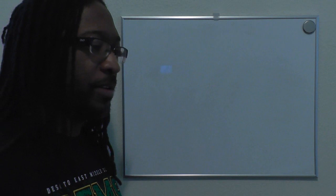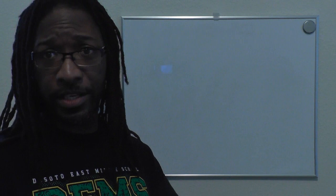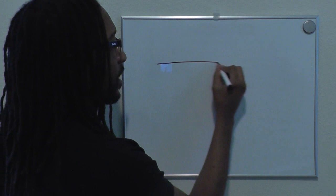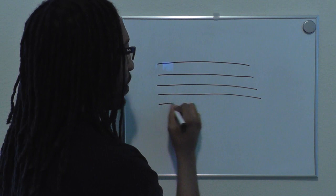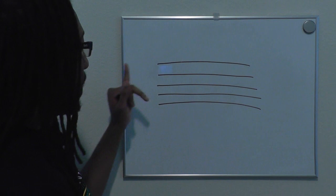Good morning everybody. We're going to be working on figuring out how the staff works today. The staff in music is what we use to be able to read our notes — that's how we're able to tell if a note is an A, B, C, D, E, F, or G, and know what note to sing or play on piano or any instrument. The staff consists of five lines and the four spaces between those lines.